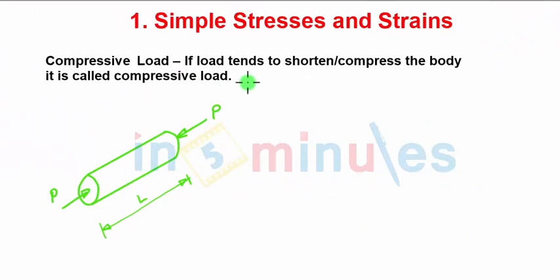Compressive load: if the load tends to shorten or compress the body, it is called as compressive load. Consider this uniform cross section rod which is being acted upon by load P as shown in figure. You can see the direction changed, reversed. The action of this force on the body is to reduce the length of the body, shorten its length, so that the changed length LC is shorter than L. Such load is called as compressive load.